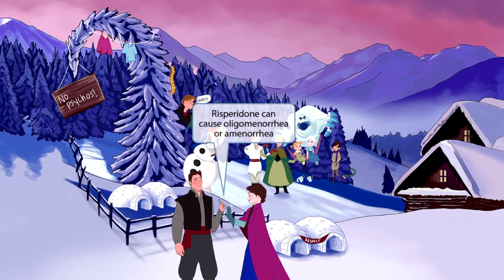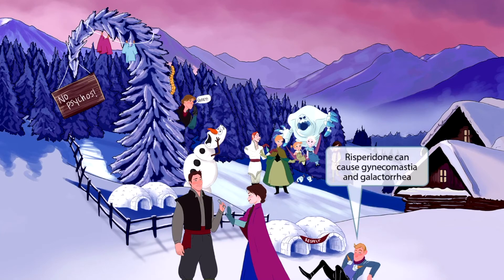Now let's dive into the adverse effects. Near the respect-banner domes, a guy is very respectfully offering his girlfriend a tampon, which she kindly refuses — refusing a tampon is our recurring symbol for amenorrhea. So this interaction in front of the respect domes should help you remember that risperidone specifically can cause oligomenorrhea or amenorrhea. A nearby guy then trips on the dome, causing both ice cream cones he was carrying to land on his chest — the cones on his chest represent gynecomastia, and ice cream on the chest represents galactorrhea. Risperidone can cause gynecomastia and galactorrhea.